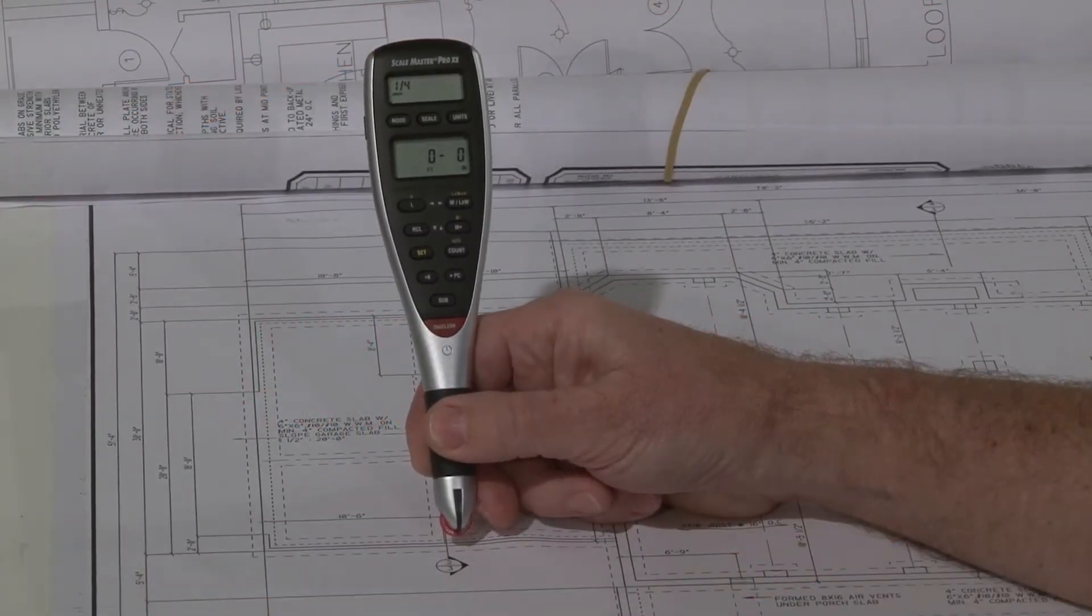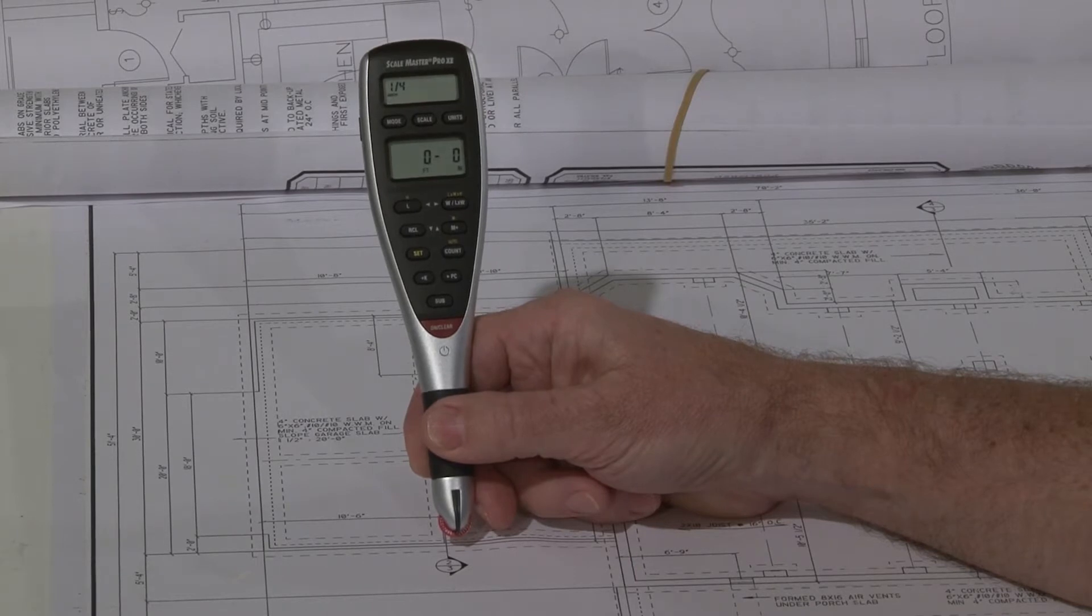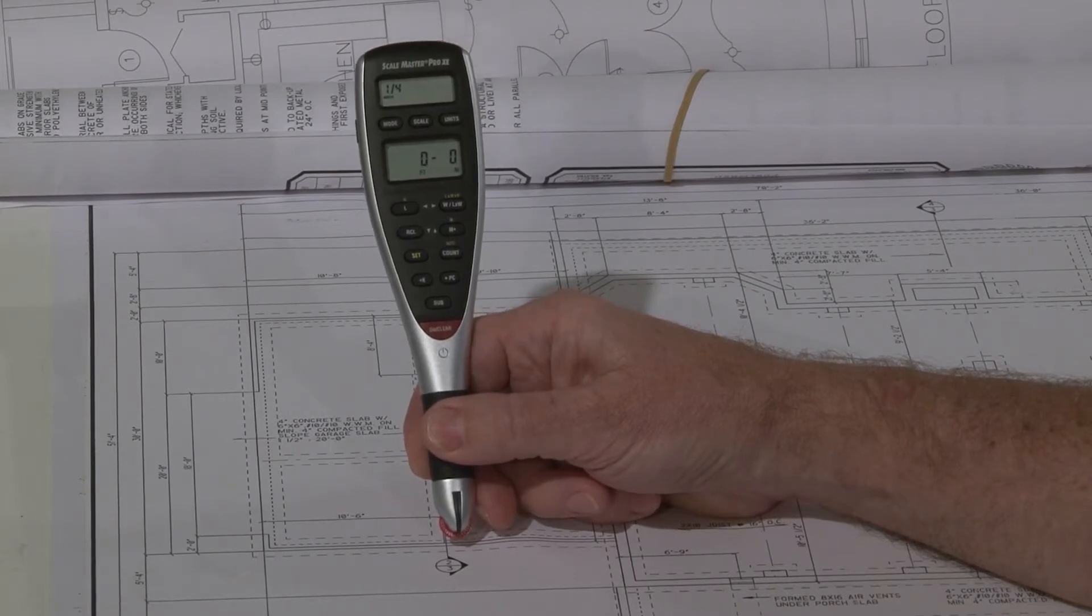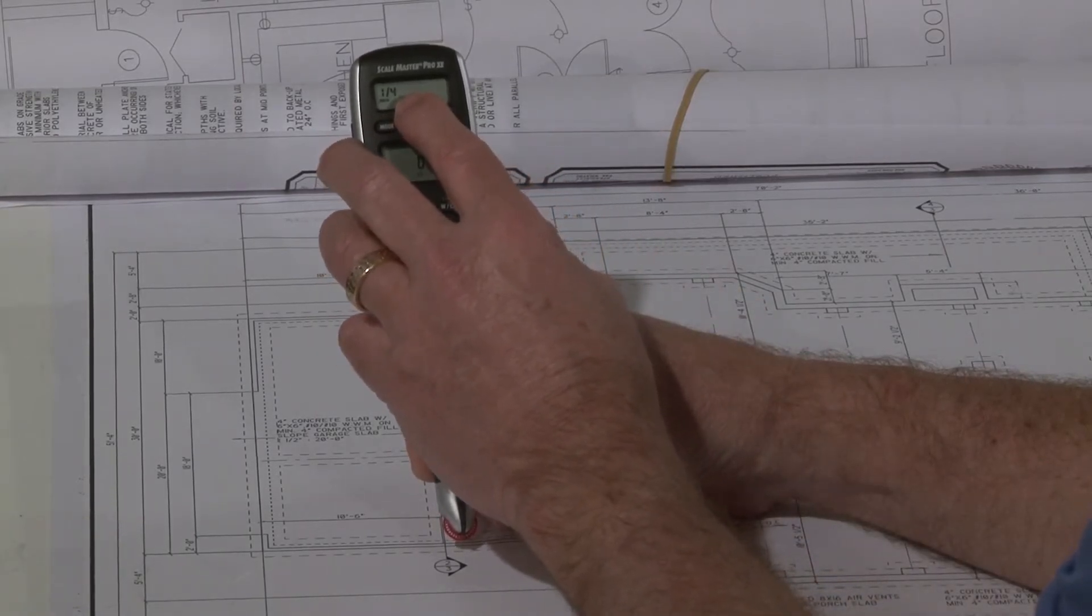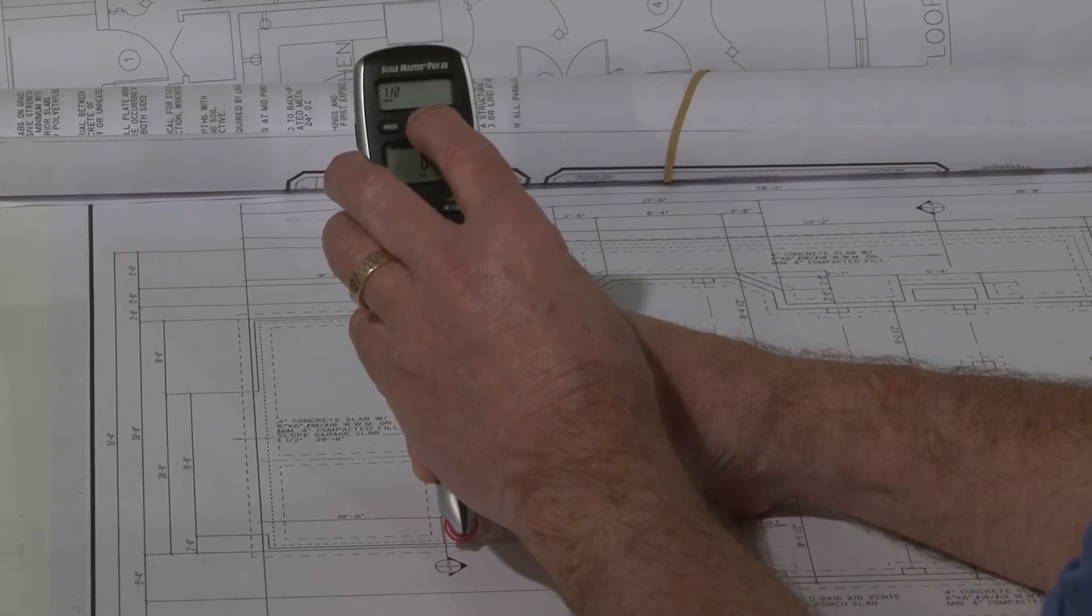Now let me show you a little bit about the operation and proper technique for using your ScaleMaster Pro XE. First off, the 91 scales that are built in are organized into different modes. Here you see we're in the architectural mode showing a one quarter inch scale. You can go through the various scales by just pressing the scale button.